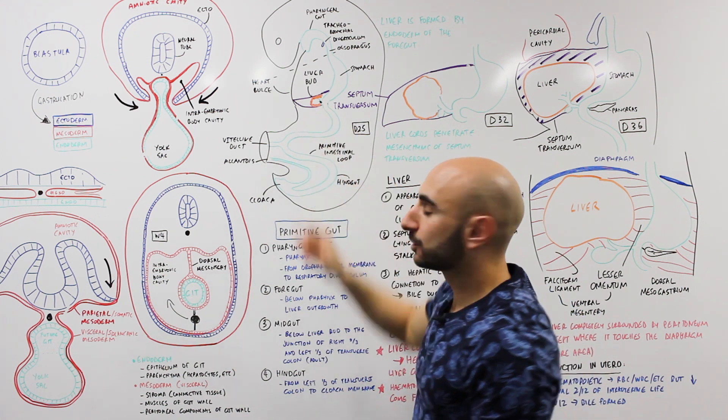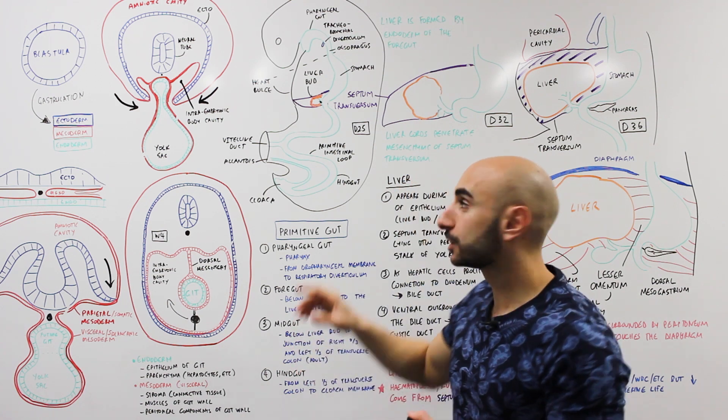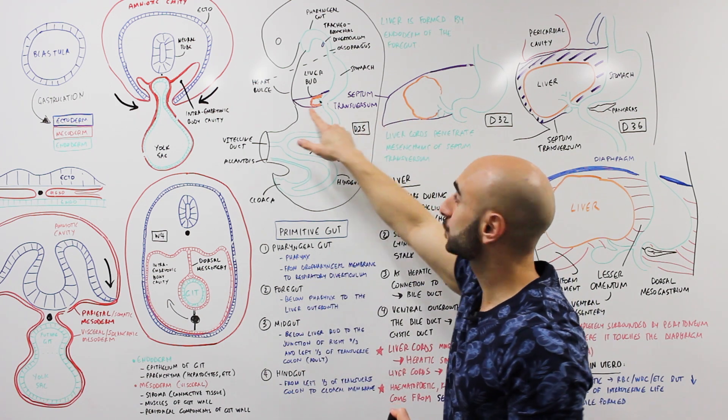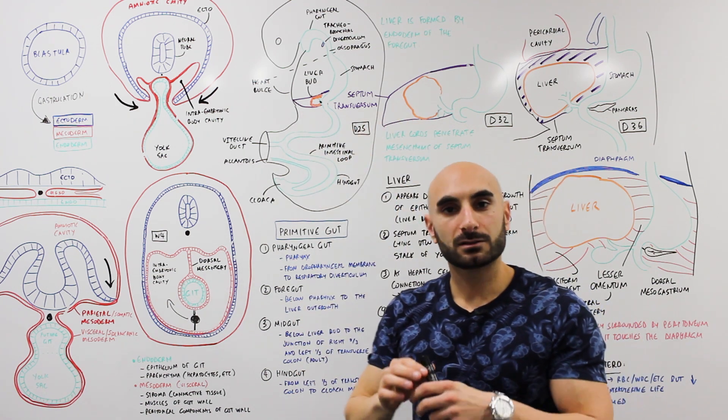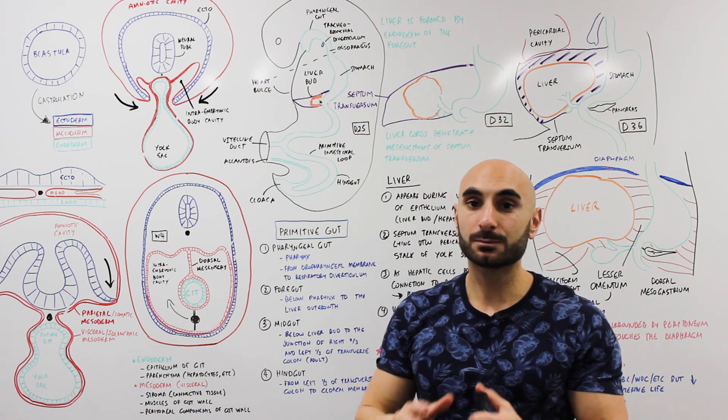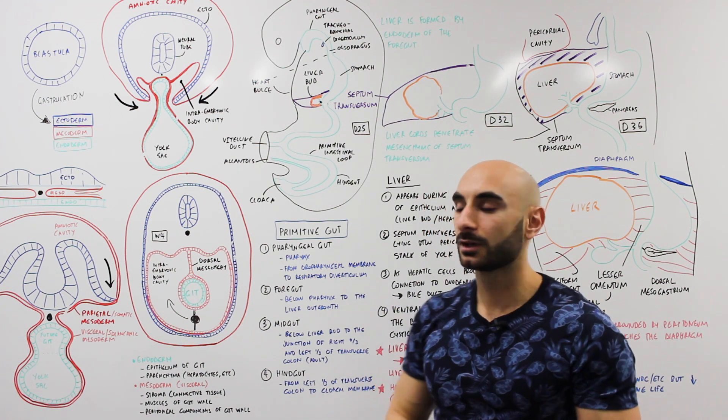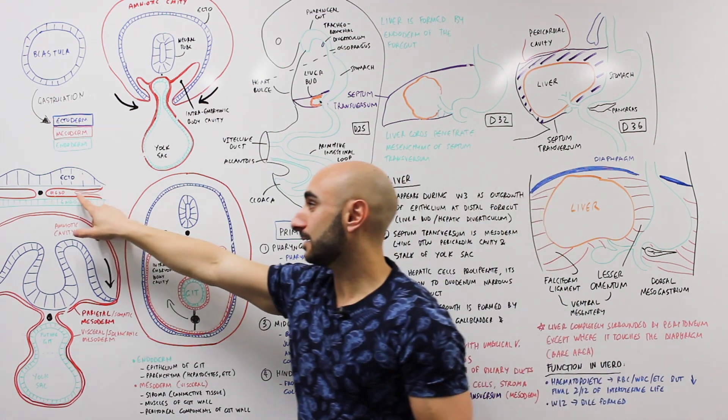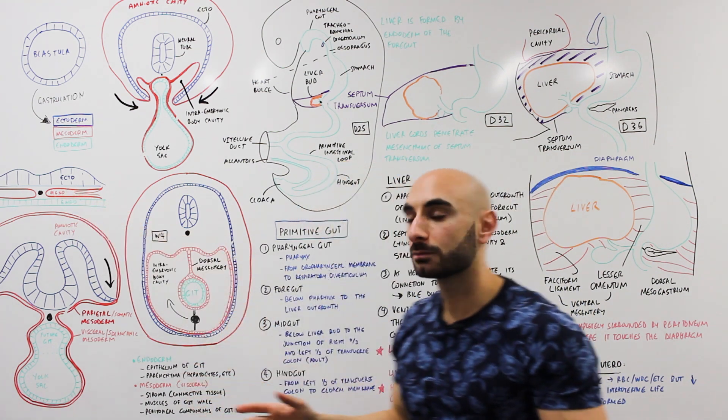So this outgrowth grows into a section that I've color-coded in purple as the septum transversum. The septum transversum is quite simply just mesoderm, so in red in here it's just mesoderm.